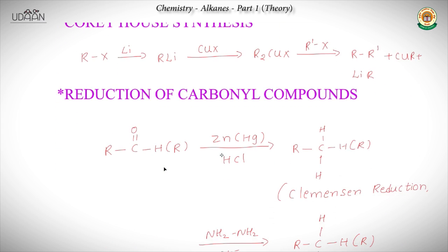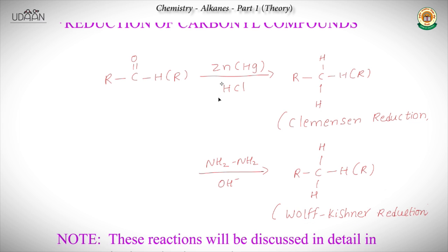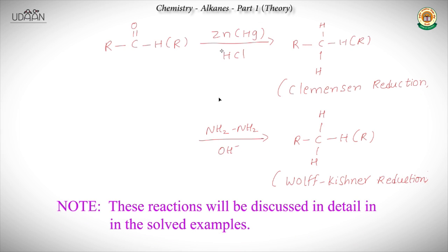The next is reduction of carbonyl compounds. There are two types: Clemmensen reduction and Wolff-Kishner reaction. In Clemmensen reduction, you treat a carbonyl compound with Zn in the presence of HCl to get an alkane. In Wolff-Kishner reaction, you treat with N₂H₂ in the presence of OH⁻ to get an alkane. Remember, Clemmensen reduction uses an acidic medium while Wolff-Kishner uses a basic medium, so their mechanisms differ. These reactions will be discussed in detail with examples.